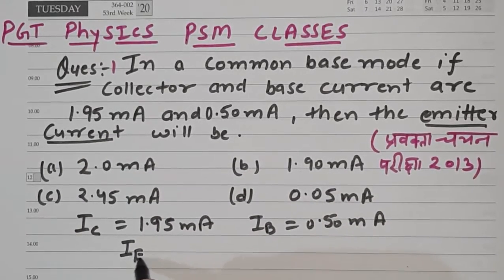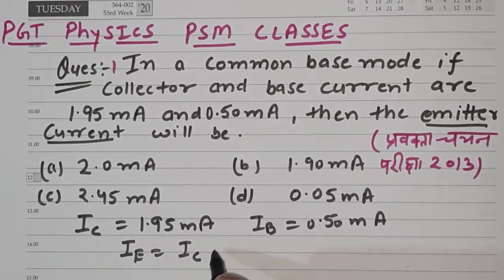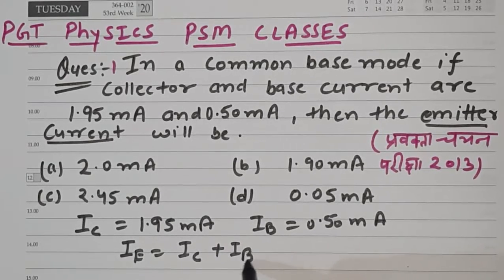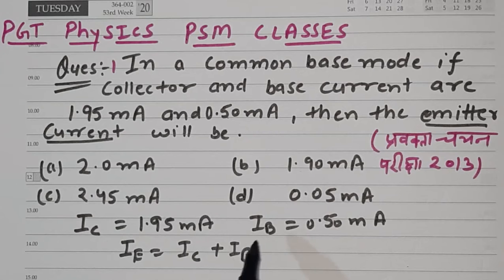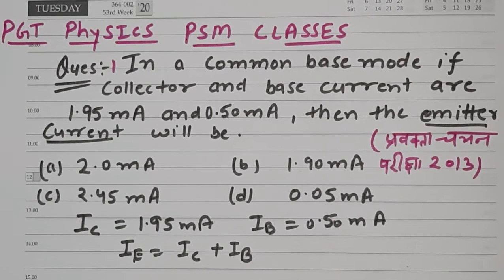So emitter current Ie is basically Ic plus Ib, or we can say collector current plus base current.